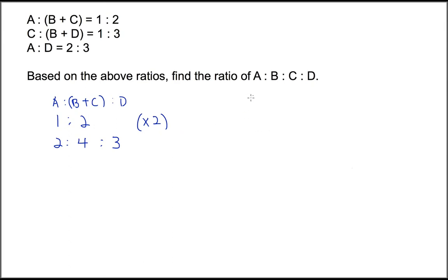Then the other side of the equation, I'm just going to write this down. C is to B plus D is 1 is to 3. Now we have B, C, D here and we also have B, C, D here. B, C, D is 4 is to 3 here. B, C, D here is 1 is to 3.